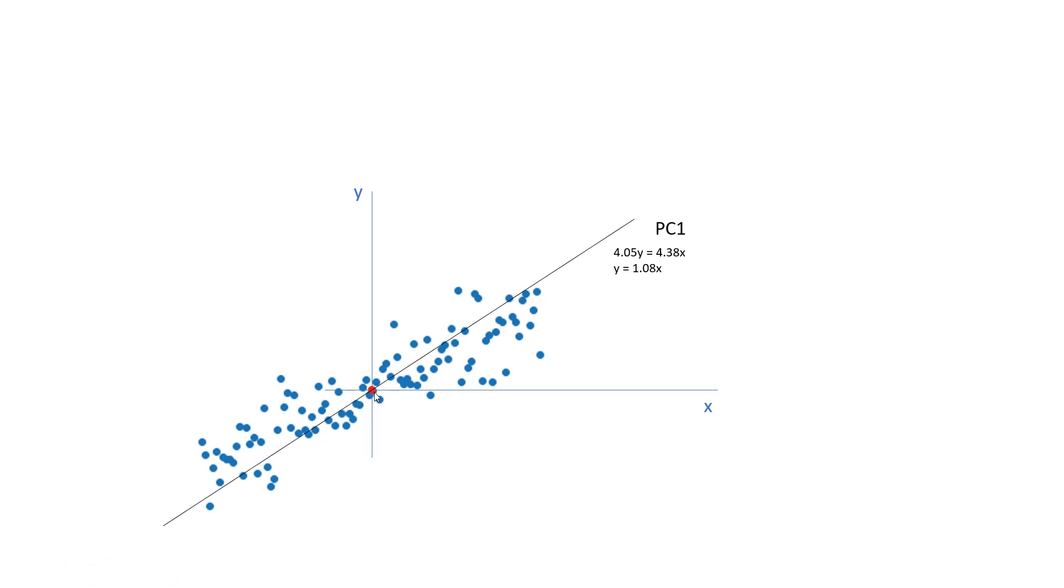Now we will draw a particular line or we will draw actually multiple lines. For example, this is one line and this is say another line. This is the third line. We will draw multiple lines like this, and we will try to find one of these lines which is maximizing the amount of information that it can capture basically.